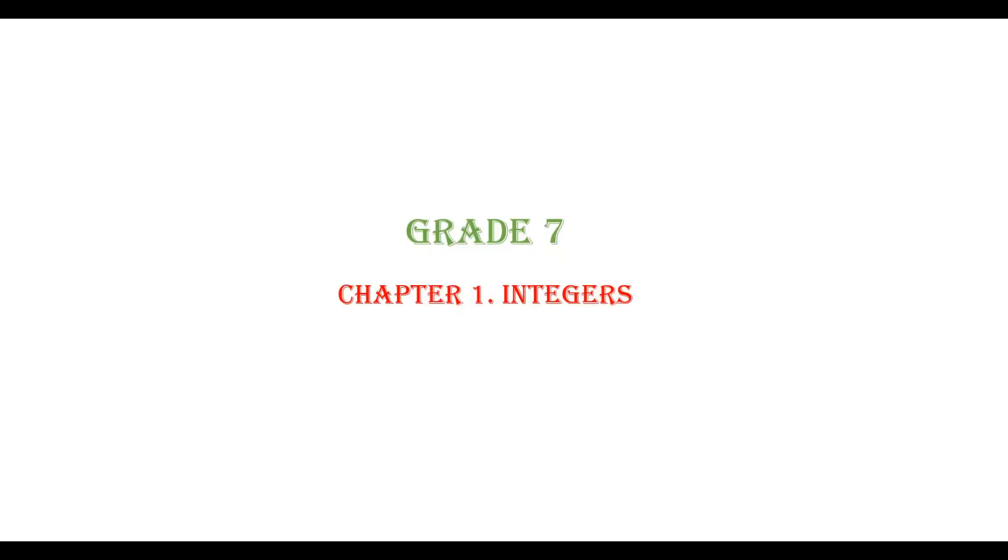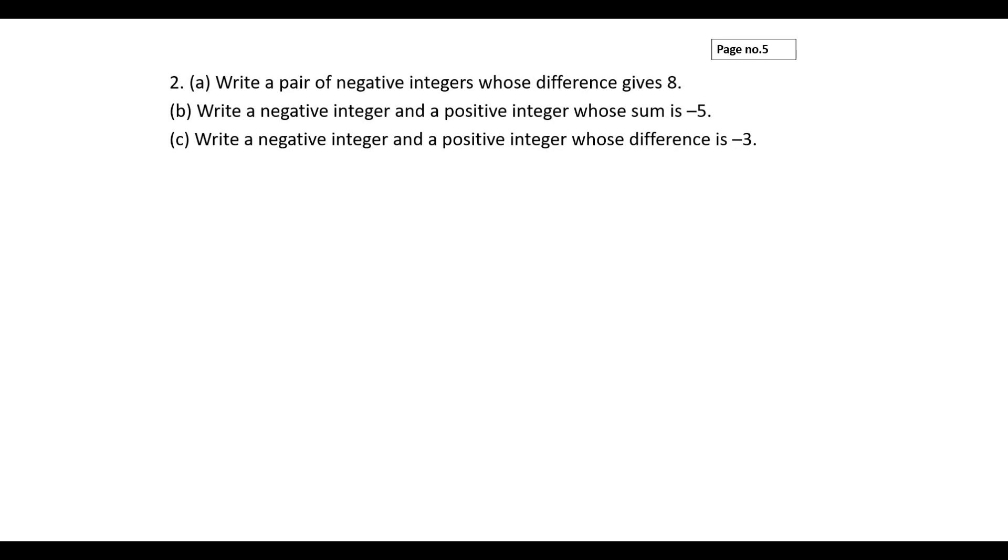In this video, we will see Grade 7, Chapter 1, Integers, Exercise 1.1, second problem, part a. Write a pair of negative integers whose difference gives 8. So you have to consider two negative integers. If you subtract those two negative numbers, you should get 8.